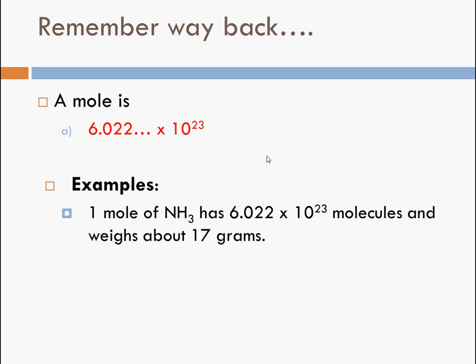So here's some examples. One mole of ammonium, which is one nitrogen atom and three hydrogen atoms, has 6.022 times 10 to the 23rd molecules and weighs about 17 grams.